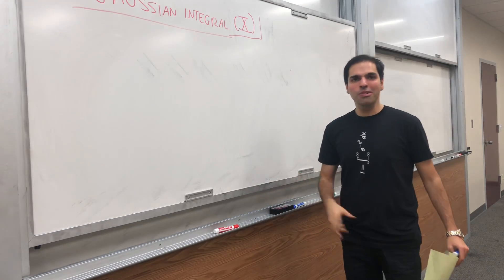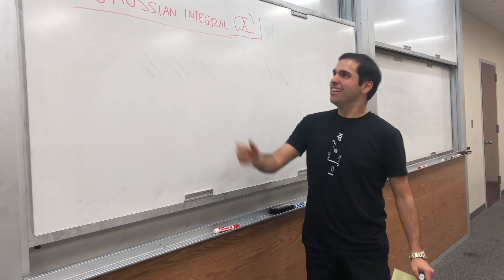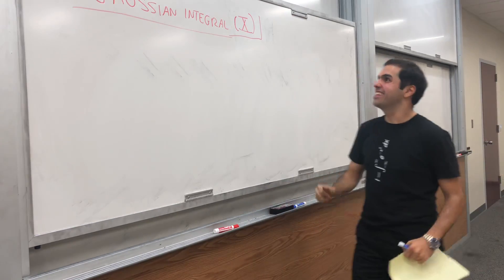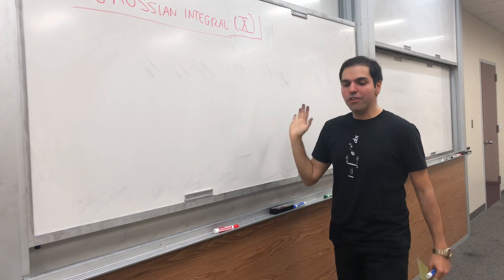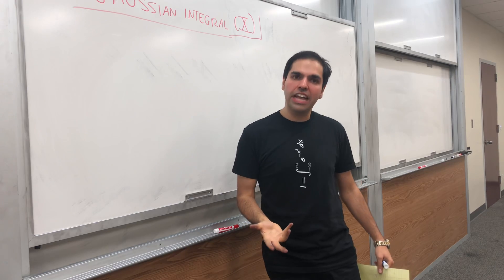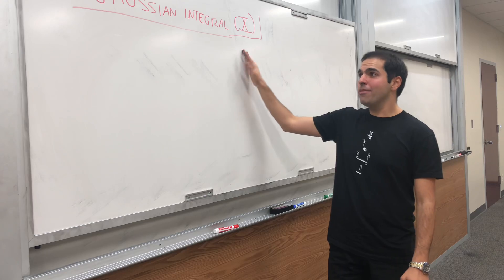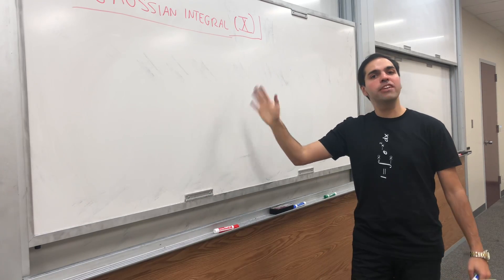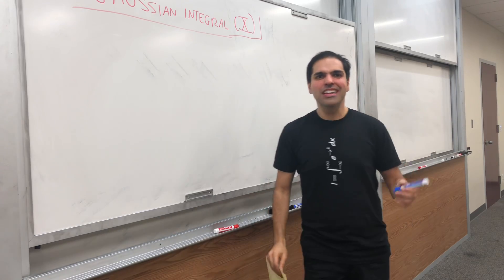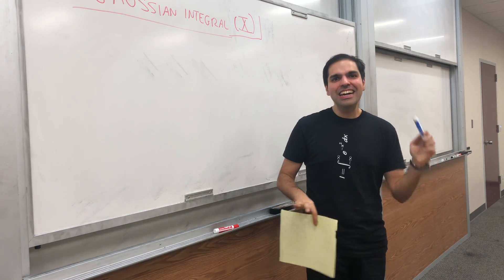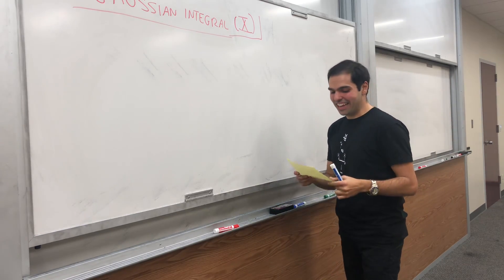Thanks for watching and welcome to our 10th way of doing the Gaussian integral — Gaussian Integral X. Today is another one of those formulas where I don't derive the Gaussian integral but show where it appears. This time we'll show that it naturally appears in the Fourier transform. This is not my idea — it's all based on Keith Conrad's notes, which are excellent. You should check them out.